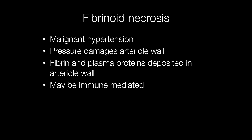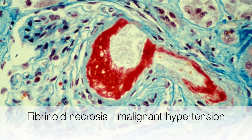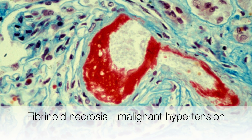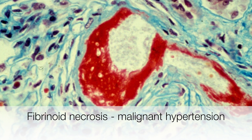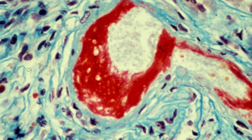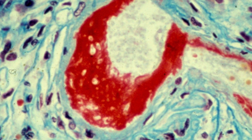In malignant hypertension, the pressure damage to the arterial wall results in fibrin and plasma proteins being deposited. The necrosis causes weakness of the vessel wall, making it prone to rupture and haemorrhage. Fibrinoid necrosis may also be immune mediated. The orange part of this arterial wall is a focus of fibrinoid necrosis, from a case of malignant hypertension.